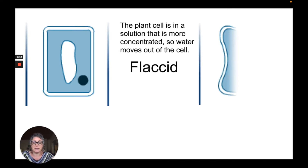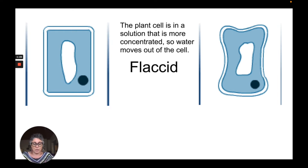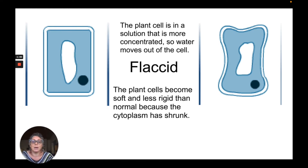The first term is flaccid. A flaccid cell or flaccid plant structure is when the plant cells have been placed in a solution that is more concentrated than it. The potato was placed into a five gram sugar solution in 100 millilitres of water, which was more concentrated than the sugar in the potato. Due to the water potential gradient, water moves out of the potato into the outside solution. We end up with a cell that is flaccid — the plant cells become soft and less rigid than normal because the cytoplasm has shrunk slightly, as seen in this illustration.